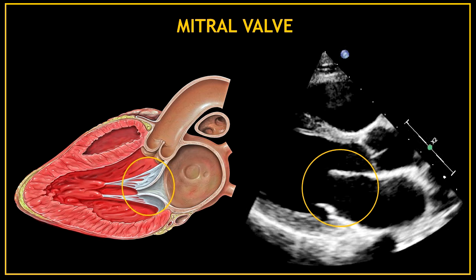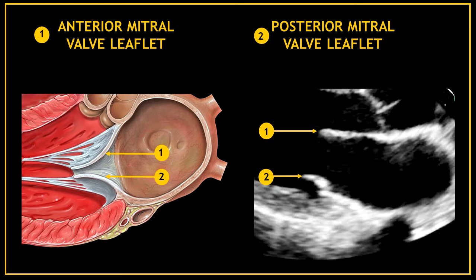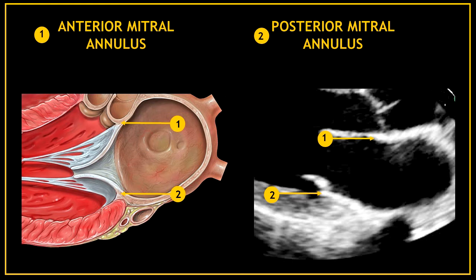The second valve at the bottom is the mitral valve. The first line at the top corresponds to the anterior mitral valve leaflet and the second line at the bottom corresponds to the posterior mitral valve leaflet. The mitral valve annulus serves as an insertion site for the leaflet tissue — the first arrow is pointing to the anterior mitral annulus and the second arrow is pointing to the posterior mitral annulus.